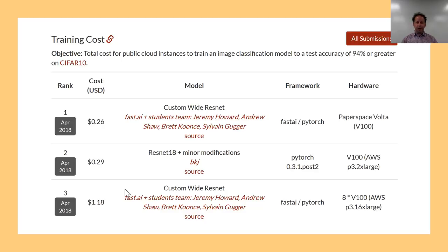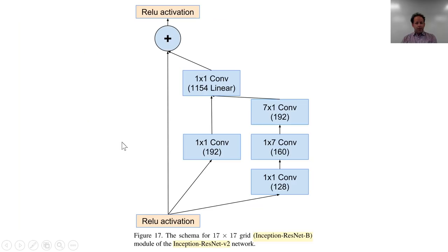And same for cost, the top three. Brett ran this on Paperspace and got the cheapest result, just ahead of BKJ. I think you can see a lot of the interesting opportunities at the moment for training stuff more quickly and cheaply are all about the learning rate annealing, and size annealing, and training with different parameters at different times. I still think everybody's scratching the surface — I think we can go a lot faster and a lot cheaper, and that's really helpful for people in resource-constrained environments, which is basically everybody except Google, maybe Facebook.